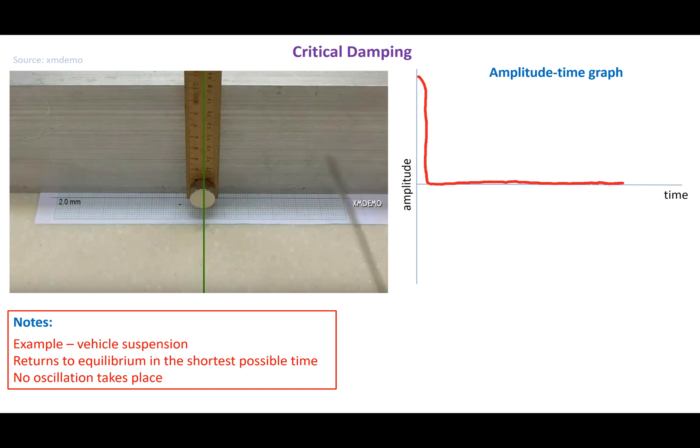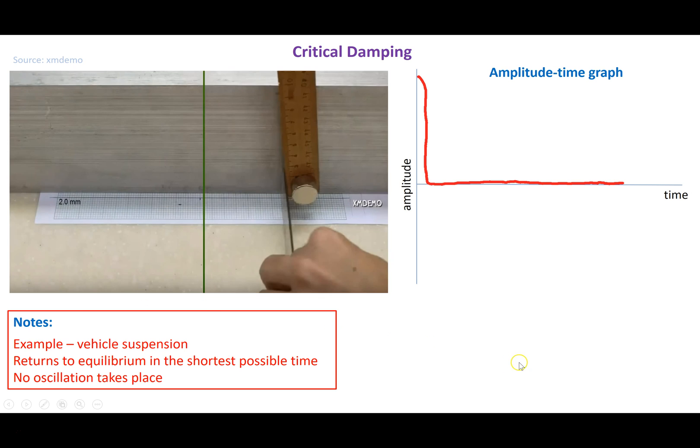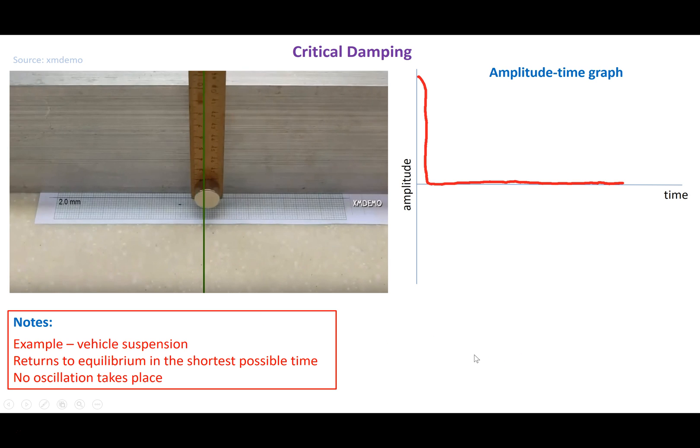Critical damping is actually used quite a lot, particularly in vehicle suspension. If we look at the video for critical damping, I'm going to pull it back. It comes very quickly back to the equilibrium position. In fact, it comes back to the equilibrium position in less than half an oscillation.